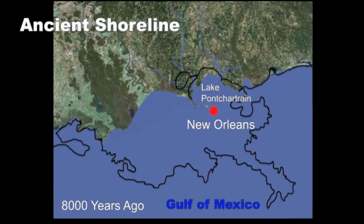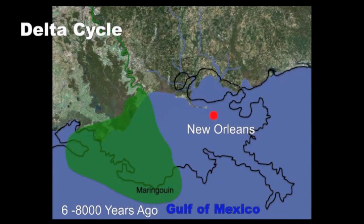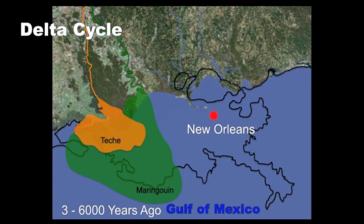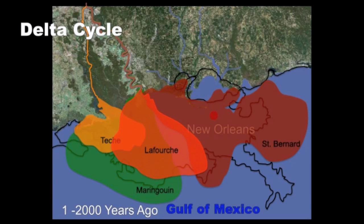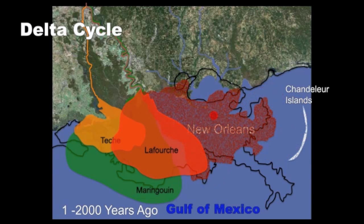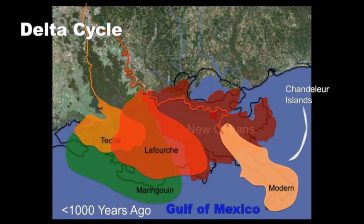Sea level rise then slowed and the river began building up sediments along the coast. Scientists call these deposits delta lobes. Additional delta lobes were formed as the river switched from east to west and back again. When the river switched to a new course, the abandoned lobe began to deteriorate, a process that caused formation of barrier islands. The last area to form is what is now the modern delta.